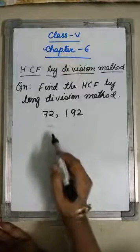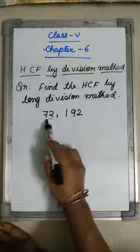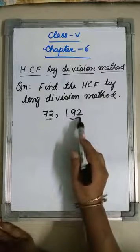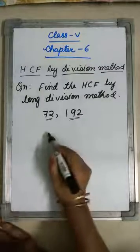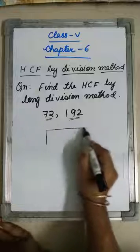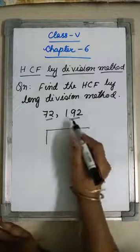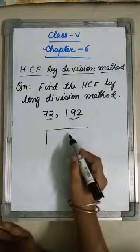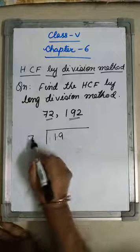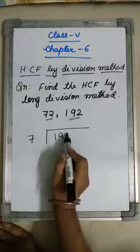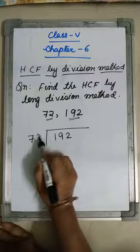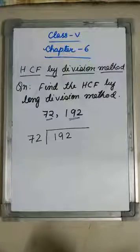I have to find the HCF of 72 and 192. The smaller number is 72 and the bigger number is 192. So I shall divide the bigger number 192 by the smaller number 72.